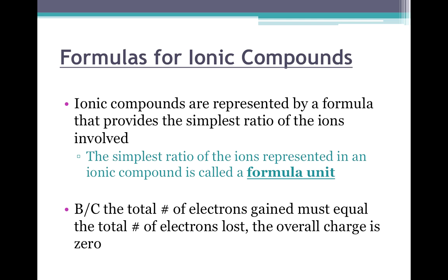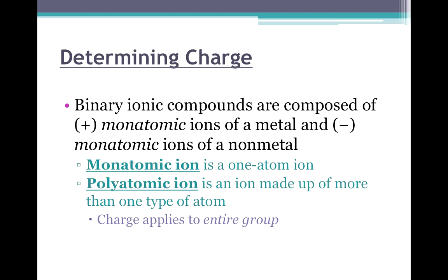Ionic compounds are represented by something called a formula unit, which is the simplest ratio of the ions present. The ratio is in terms of the subscript, which is the little number written after the element symbol. Because the total number of electrons gained must equal the total number of electrons lost, the overall charge of an ionic compound should always be zero. When you add the charge of the cation and the charge of the anion, it should exactly equal zero so that the overall compound is neutral.